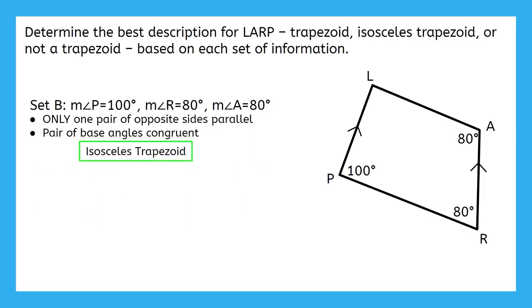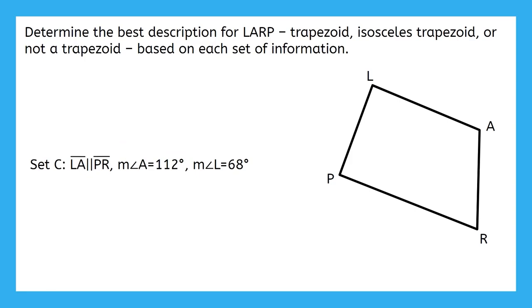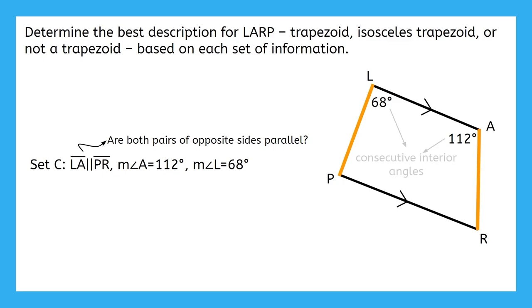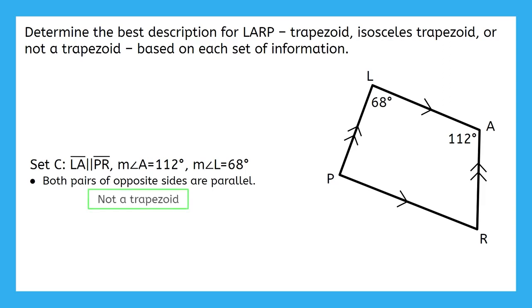Now, let's see how we do with set C. Set C says LA is parallel to PR, the measure of angle A is 112 degrees, and the measure of angle L is 68 degrees. Pause the video now and try this one on your own. The first thing I did was fill in information on my picture. So, I marked LA and PR as parallel and added in my angle measures. Since I already have one pair of parallel sides, the next thing I want to check is whether the other pair of sides are parallel. And again, I only have angle measurements to work with to figure that out. Angles L and A are consecutive interior angles between LP and AR. They are also supplementary, since 112 and 68 have a sum of 180. Uh-oh, that means LP and AR are parallel, and that means that both pairs of opposite sides in LARP are parallel, so it is not a trapezoid.